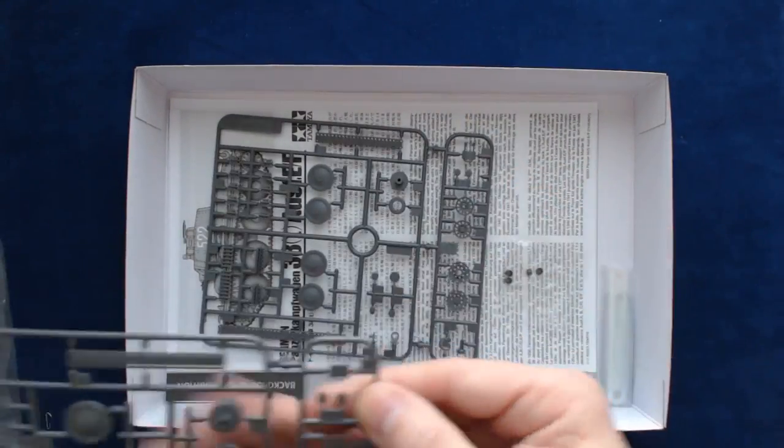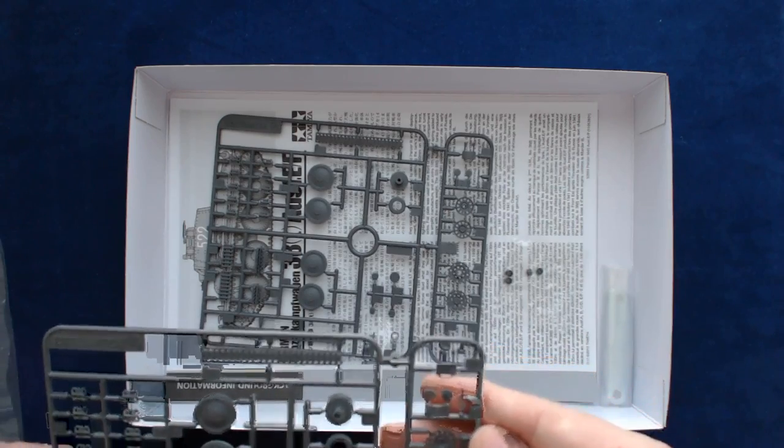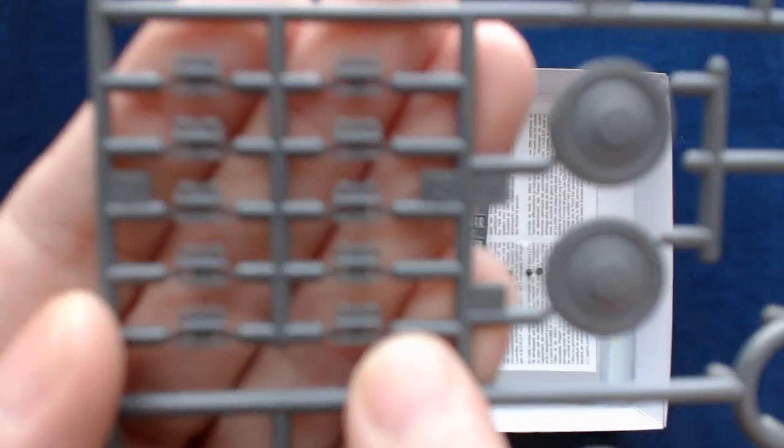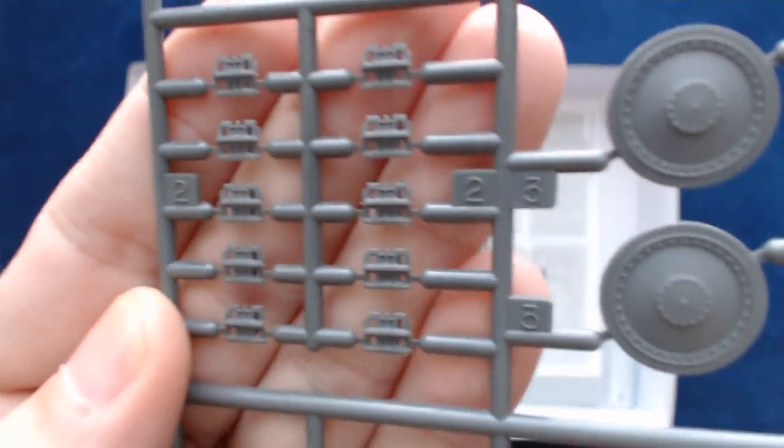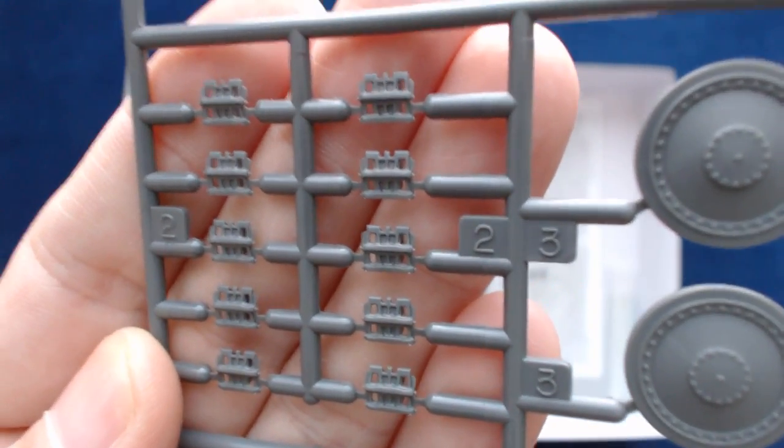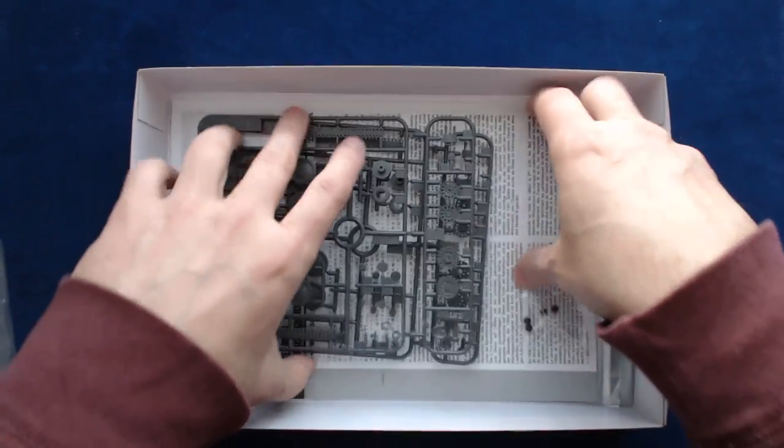And then, of course, the same piece repeated. I guess you put the smaller track links here, you're going to put those together to form the curved areas that go around the sprocket, the main drive sprockets and idler wheels. And then, yeah, that's probably how that works.